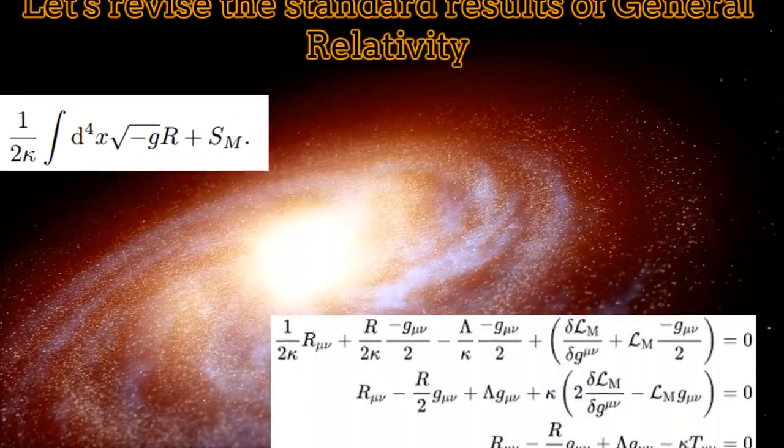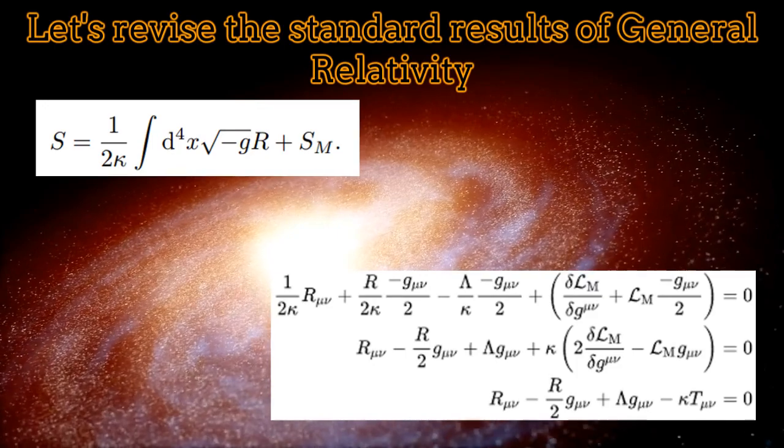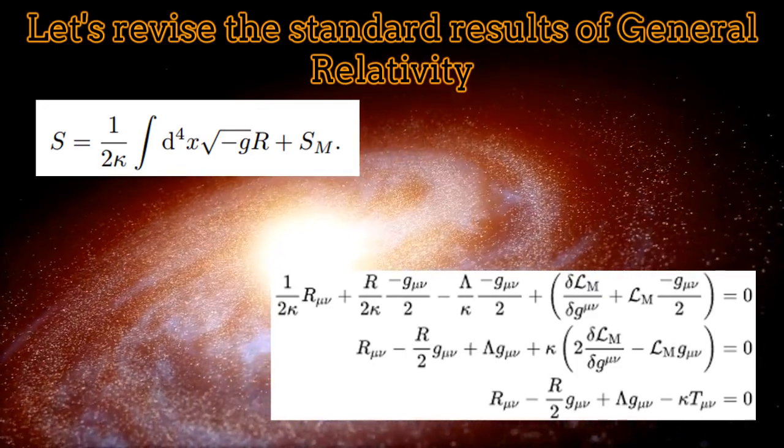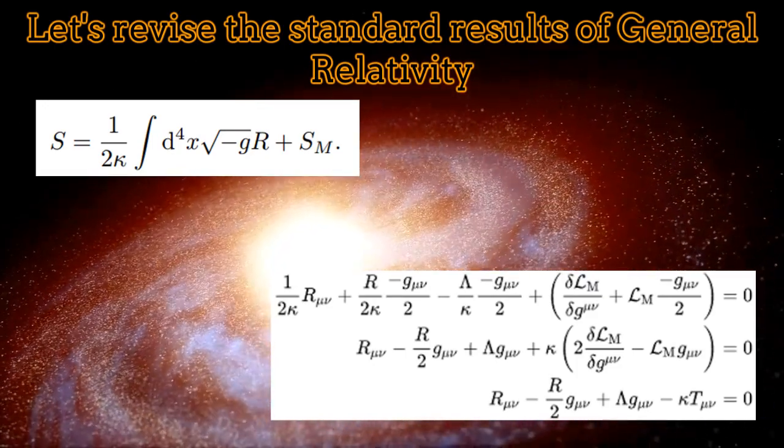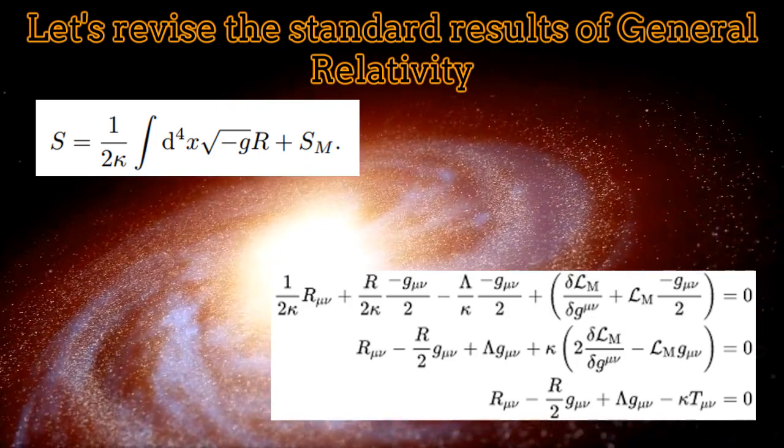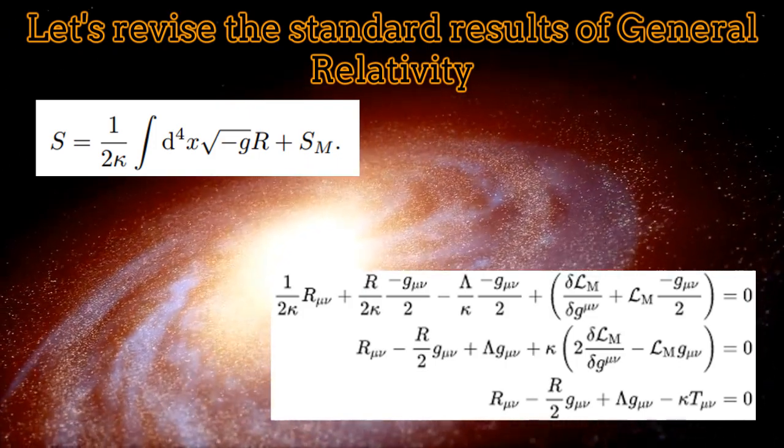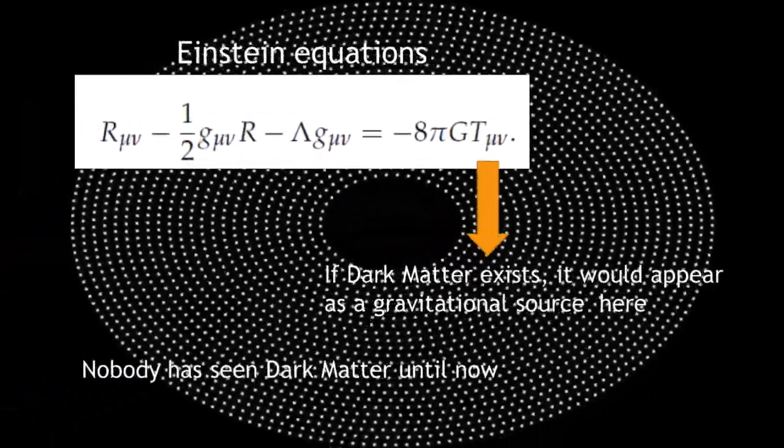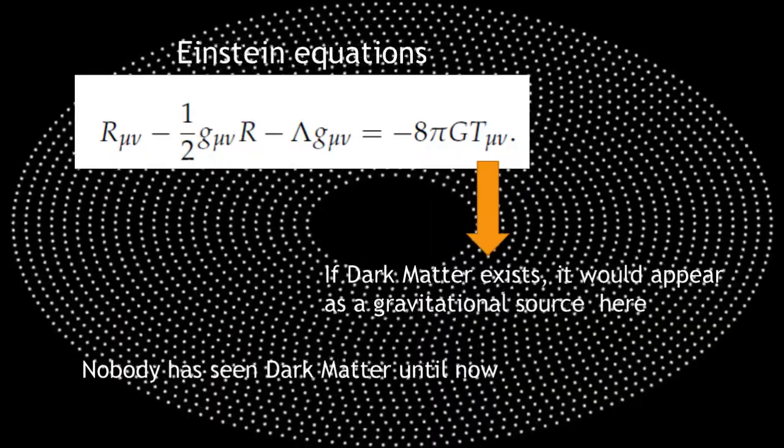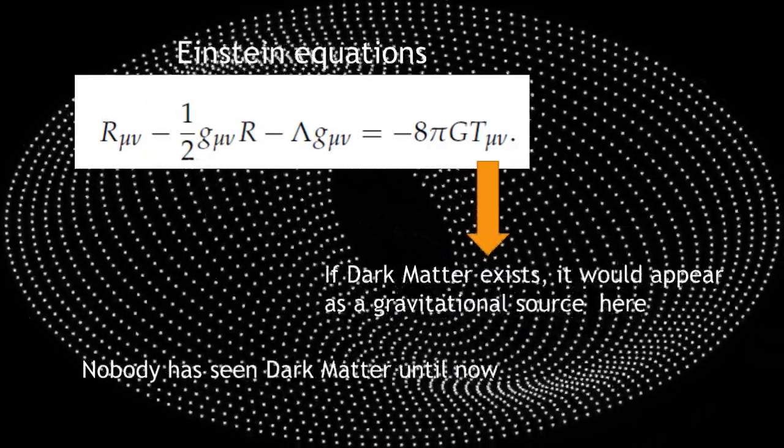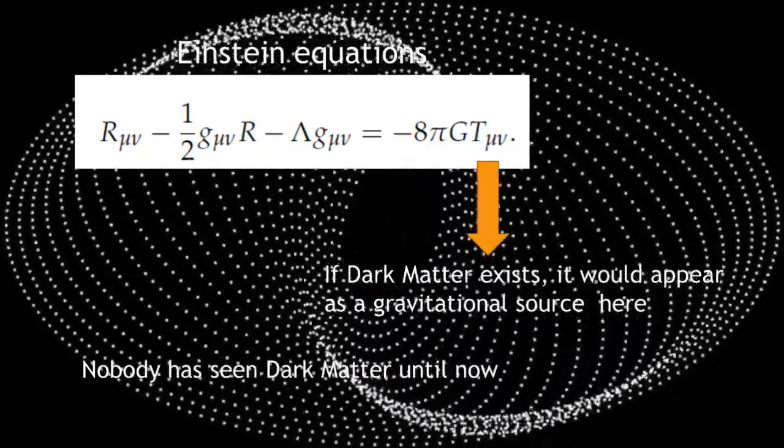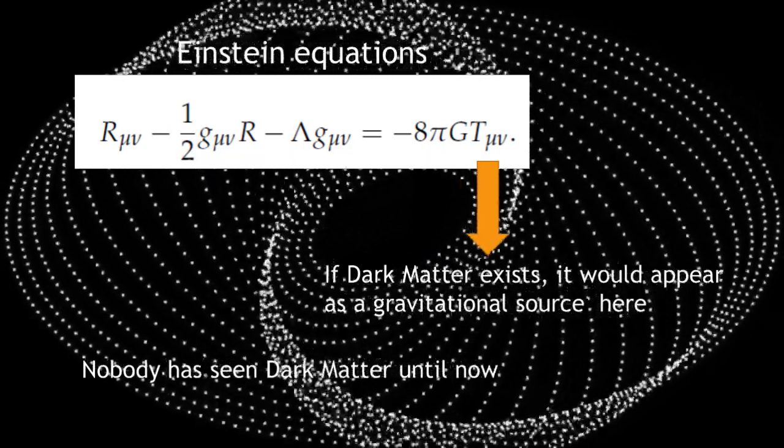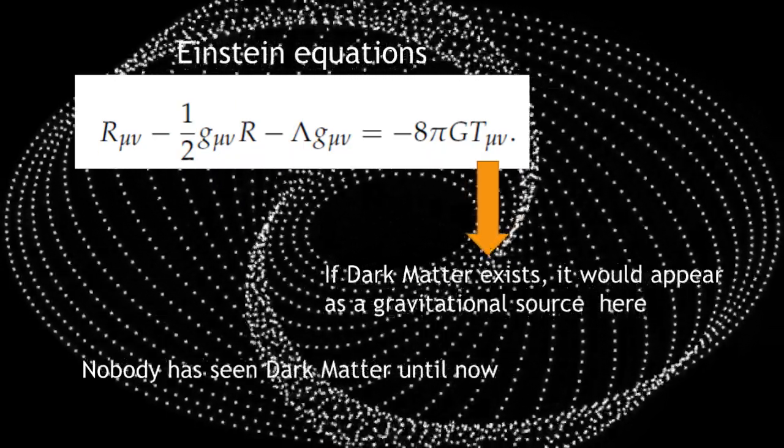After revising the problem of dark matter, now let's revise the standard formulation of general relativity. On the screen we can see the Einstein-Hilbert action with the corresponding Einstein equations. If general relativity is the right theory of gravity, then the effects of dark matter will appear inside the energy-momentum tensor, which is the right hand side of the Einstein equations.